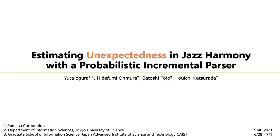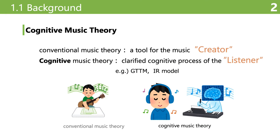In this research, we especially pay attention to the notion of unexpectedness. We use a probabilistic incremental puzzle and estimate where the unexpectedness occurs. Let me explain the background of this study. We did a study on cognitive music theory. Cognitive music theory is different from conventional music theory. Conventional music theory is a tool for creators, such as for composing and arranging music. Alternatively, cognitive music theory focuses on the cognitive process of the listener. It is a theory of music analysis that considers the question: how do we understand music?